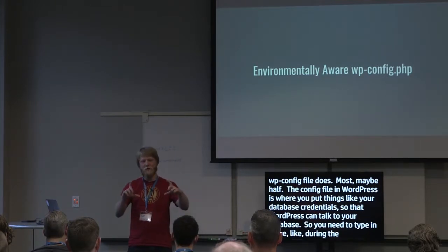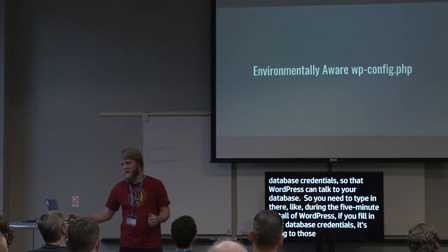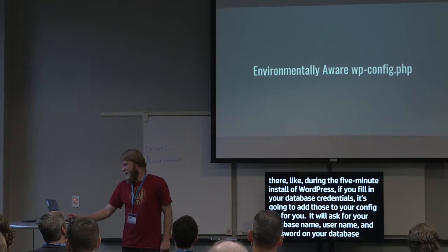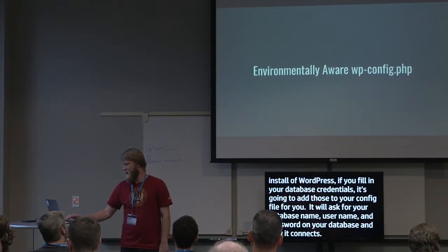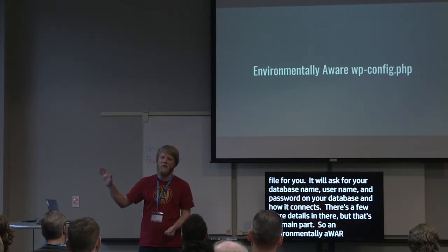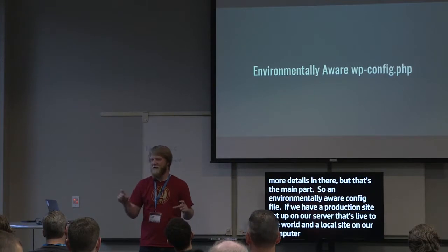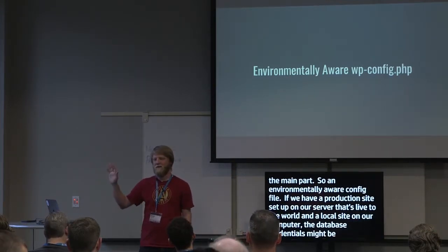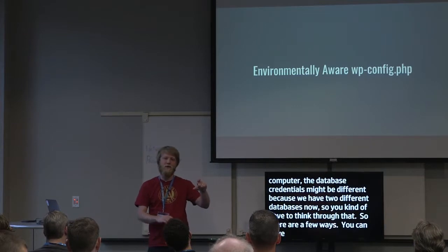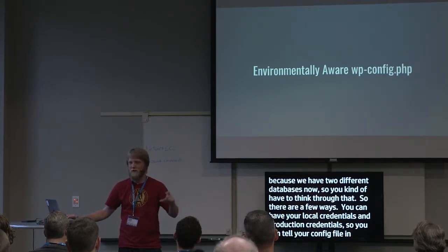During the five-minute install of WordPress, if you fill in your database credentials, it will add those to your config file for you. It asks for your database name, username, password, and how it connects. An environmentally aware config file is useful when you have a production site and a local site — the database credentials might be different, so you need to think through that. You can have your local credentials and production credentials in the same config file and tell it which to use in which instance.